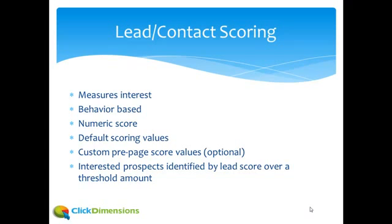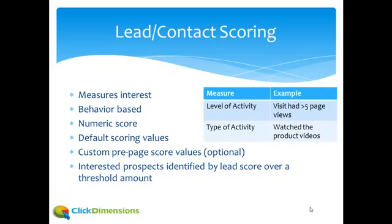Scoring is all about interest — it's behavior based and you get a numeric score. We give you default scoring values to get you started, and we let you custom score certain pages if you want. Interested prospects are identified by their lead score being over a threshold amount that makes sense to you. For example, if somebody had a visit with over five page views, that shows a good level of activity. If they watch your product videos, that's the type of activity you want.